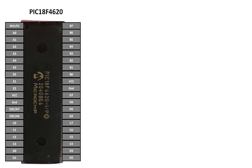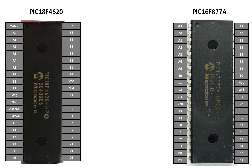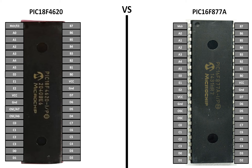This is our PIC18F4620 microcontroller having 40 pins — it's a DIP version. This is our PIC16F877A, also having 40 pins and also a DIP version. This is a versus line between both microcontrollers. As you can see, both microcontrollers have exactly the same pin configuration and the same pin layout. So let's get started with the comparison.